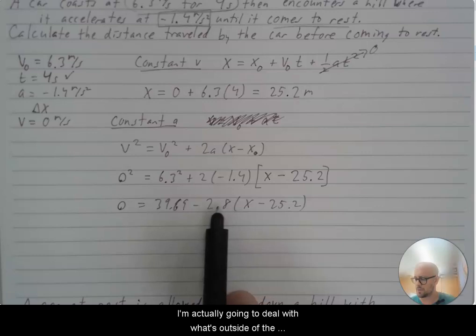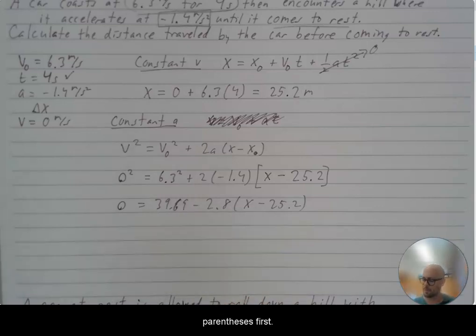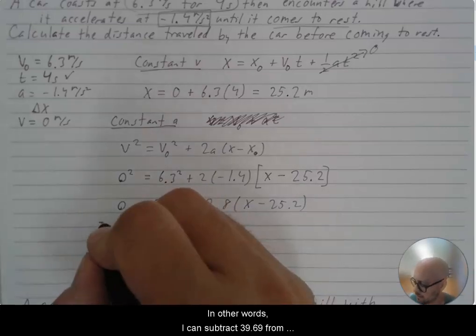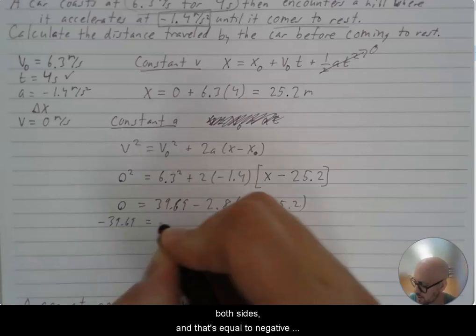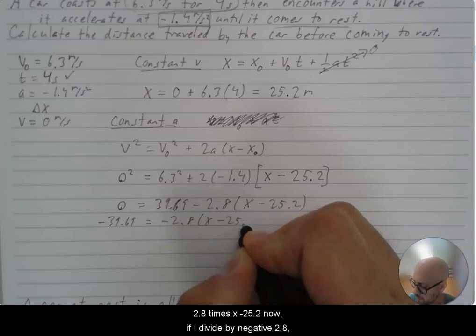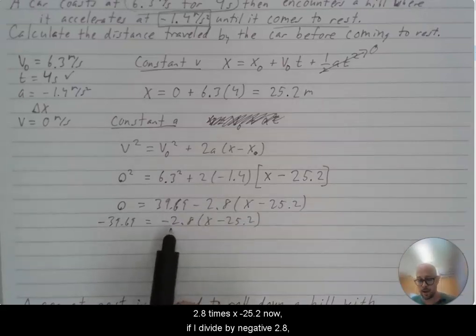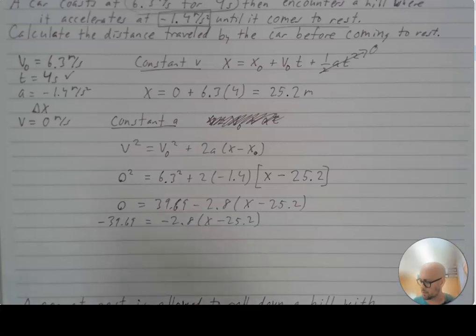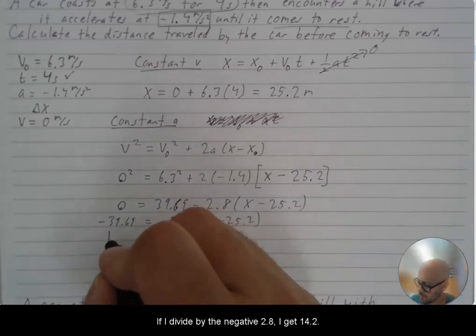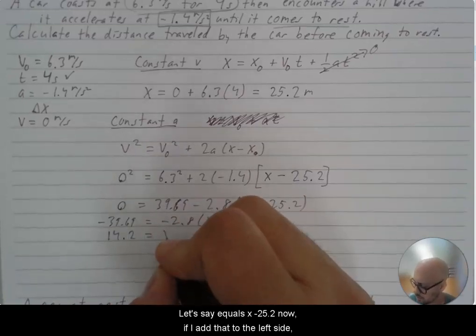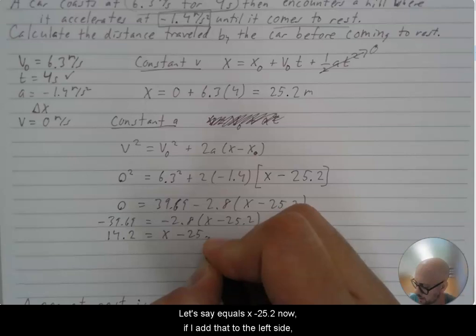In other words, I can subtract 39.69 from both sides. And that's equal to negative 2.8 times x minus 25.2. Now, if I divide by negative 2.8, I don't need to distribute that into the parentheses. If I divide by negative 2.8, I get 14.2, let's say, equals x minus 25.2.